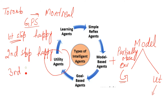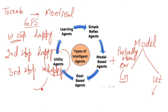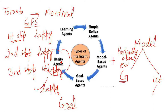At the third stop, unfortunately the road is blocked — maybe construction, an accident, or some other problem. So at the third stop, the agent is unhappy because there are obstacles. Since utility agents work with multiple options, we change our route and take another path to reach Montreal. On the new route, the state becomes happy, and we finally reach our goal state — but throughout, our focus is on the utility function.